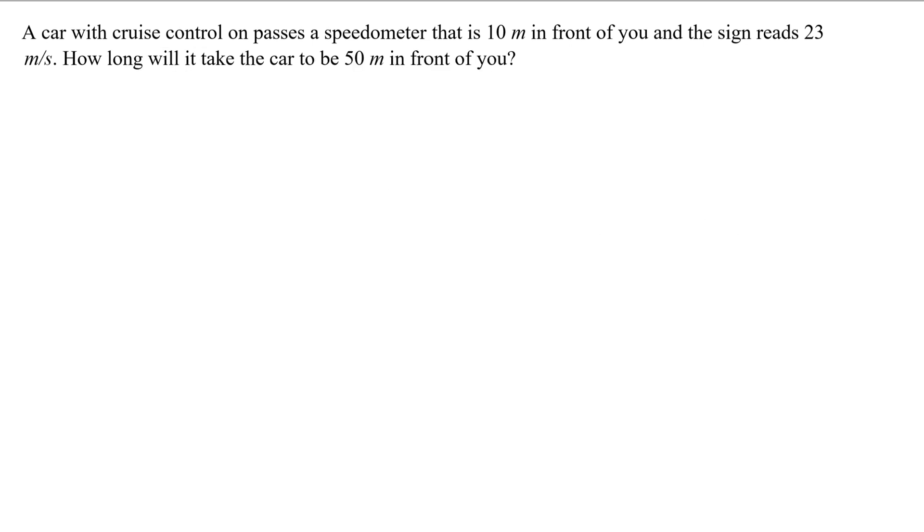Now let's do one where we have to rearrange an equation. A car with cruise control passes a speedometer, it's the exact same thing, but now it wants to know how long will it take the car to be 50 meters in front of you. In this case I'm going to write this equation out. In this case it doesn't give you the time, instead it gives you the final position. So you know the initial is 10, the final is 50, the velocity is still 23 meters a second, but it wants you to find t, the time.